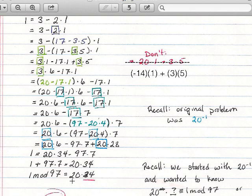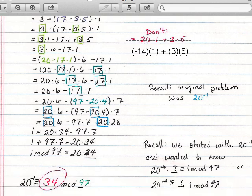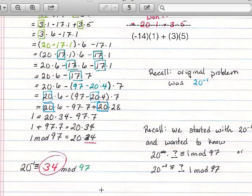Now, whatever is multiplied times, we started out with 20, and now this thing that's multiplied times the 20, the 34, that is what we're looking for. That is the answer to our problem. So we can say that 20, the inverse of 20, is congruent to 34 mod 97. So 34 is our answer.